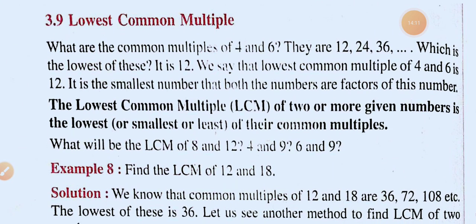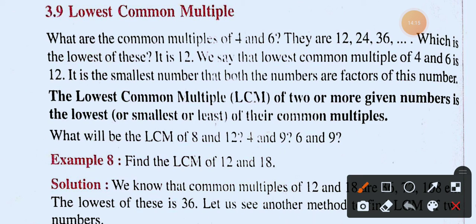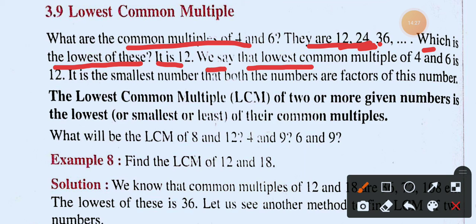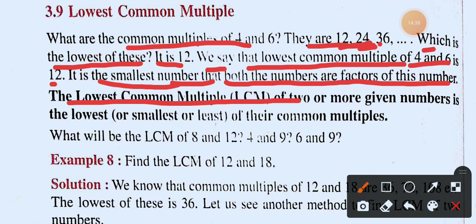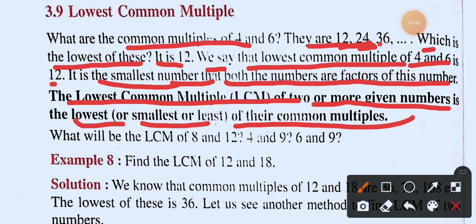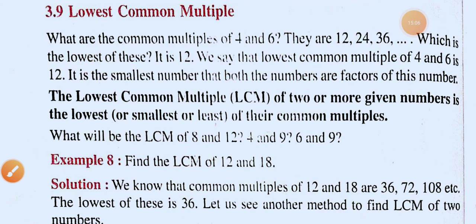Now let us look at the Lowest Common Multiple. The common multiples of four and six are twelve, twenty-four, thirty-six, and so on. The lowest of these is twelve. So the LCM of four and six is twelve — it is the smallest number that both numbers are factors of. The LCM of two or more given numbers is the lowest or smallest of their common multiples.